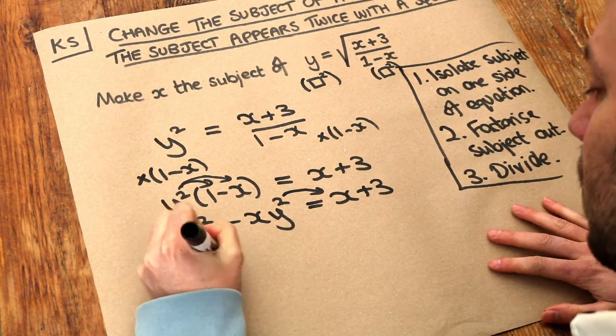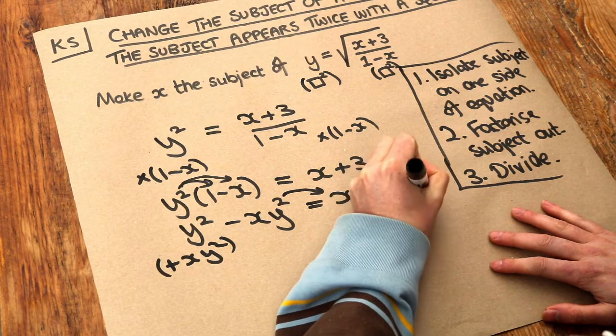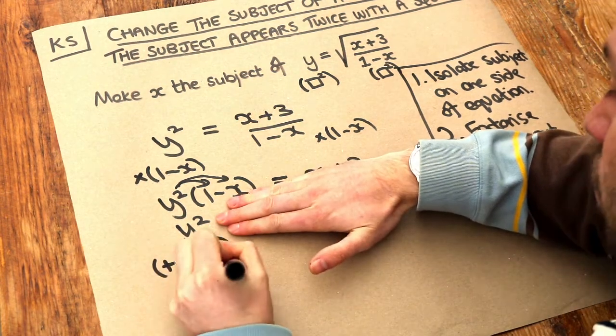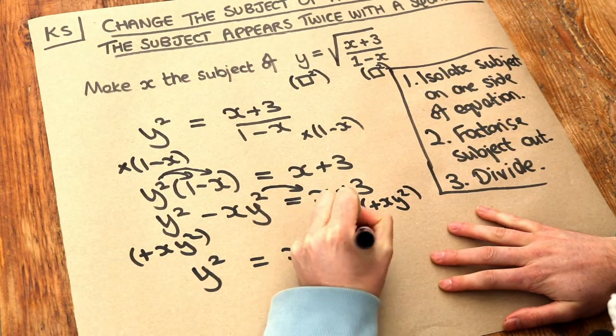Let's add xy squared to both sides of the equation. That gets rid of the minus xy squared, leaving just y squared here. And then we get x plus 3 plus xy squared.